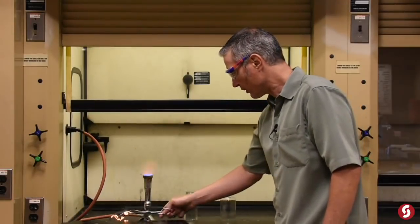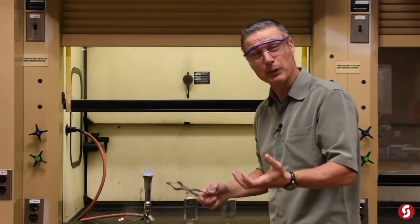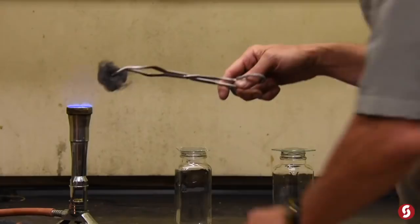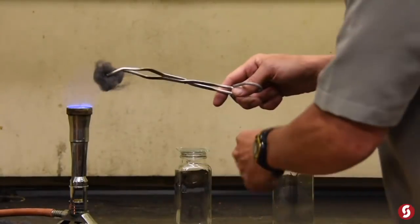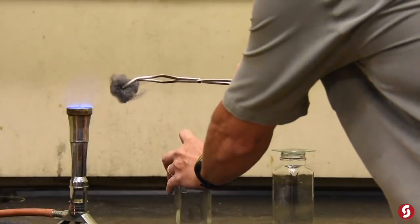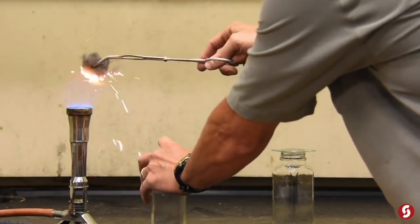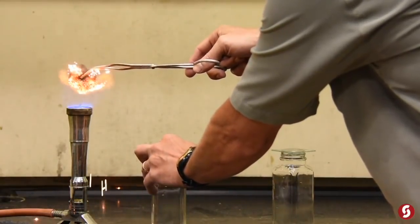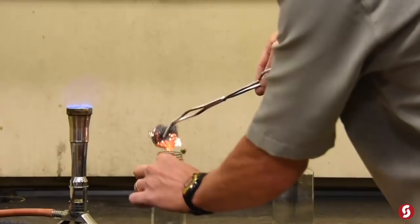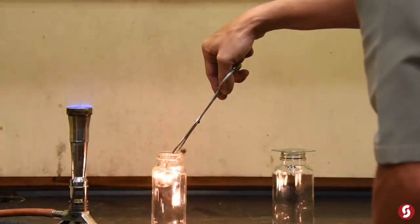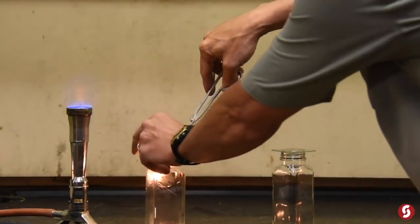Take another piece of steel wool and do the same thing, except this time I'm going to put it in the oxygen. There we go. Another piece of steel wool. I think steel wool, if I recall, is made from genetically modified sheep. And I would not wear a sweater of it.